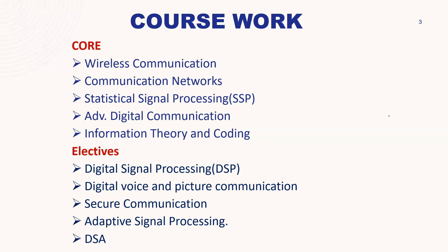You can select courses of your choice from the elective list. After discussion with students of this branch — currently my batchmates — digital signal processing is very important here, since the branch name itself suggests signal processing. Under DSP, we deal with Fourier transforms like Fast Fourier Transforms, Discrete Time Fourier Transform, and others. Then there's filter design and filter analysis, digital voice and picture communication, secure communication, adaptive signal processing, and DSA. DSA is an optional elective — coding is not that important here, but communication is really important.